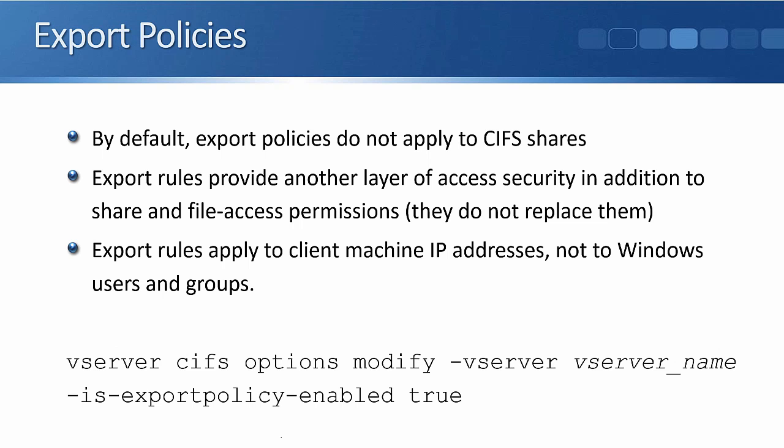By default, export policies do not apply to CIFS shares. Export policies are mandatory for NFS exports, but for CIFS shares they are optional and turned off by default. If enabled, export rules provide an additional layer of access security on top of share and file access permissions — they don't replace them but work in addition to them. Export rules apply to the client machine IP address, not to the Windows user and group. The command to enable this is: vserver cifs options modify -vserver [name] -is-exportpolicy-enabled true. This can be enabled or disabled at the SVM level.